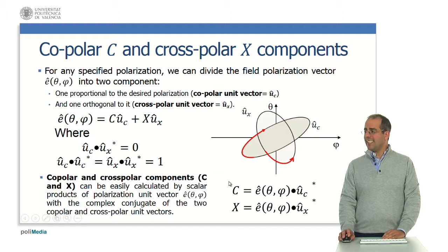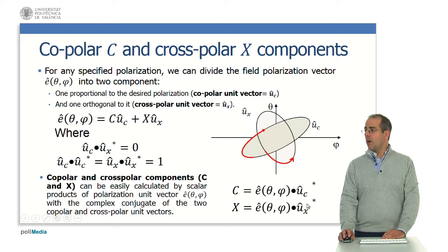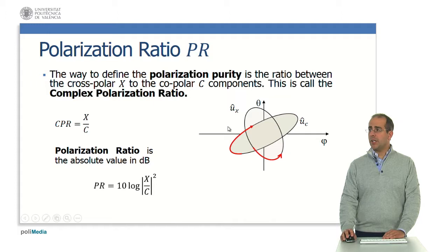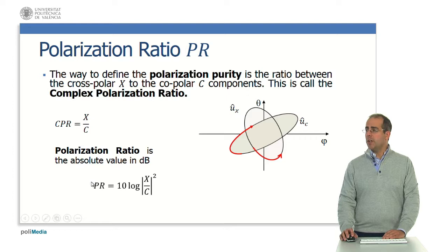Copolar and cross-polar components C and X can be easily calculated by the scalar product of the polarization unit vector with the complex conjugate of the copolar unit vector. Another definition is the polarization ratio: the way to define polarization purity is the ratio between the cross-polar and the copolar component, also called the complex polarization ratio. We can also express this polarization ratio as an absolute value in dB.